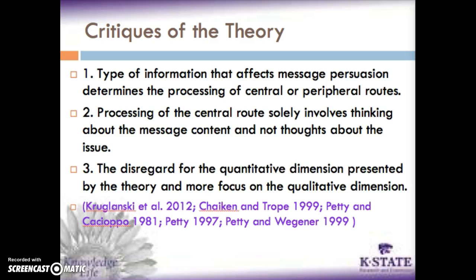Regardless of what that information is, the central route may permit source variables to influence preference for certain language usage in the message, while the peripheral route may only lead individuals to associate the goodness of source variables with the message. Theoretically, all these could occur simultaneously. Thus, the distinction between central and peripheral routes is not about the type of information being processed — as those types can be applied to both routes — but rather how that information is processed and whether processing it one way or the other results in different attitudes.